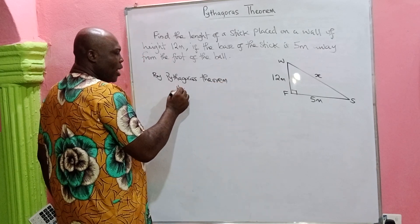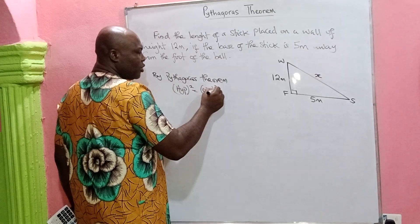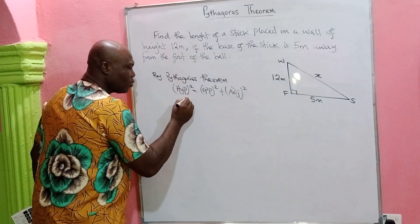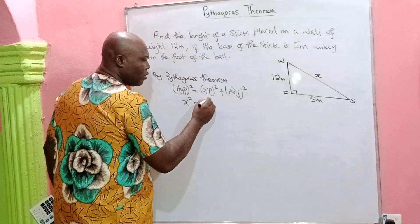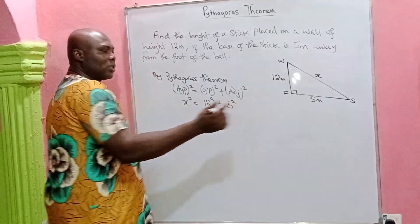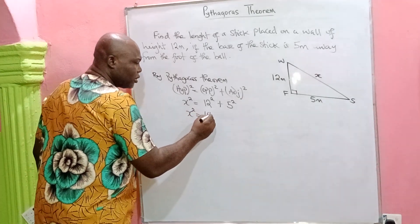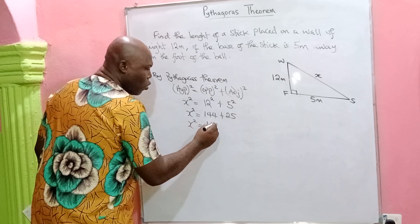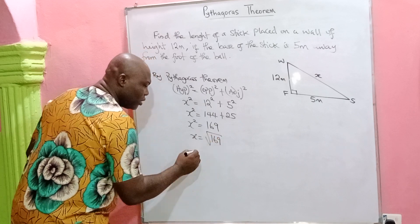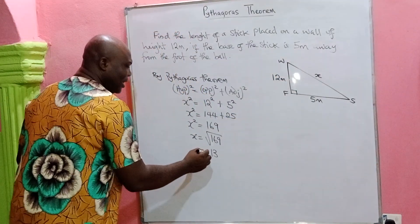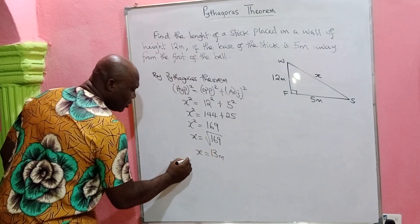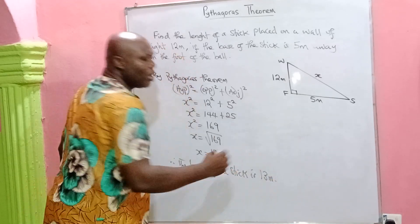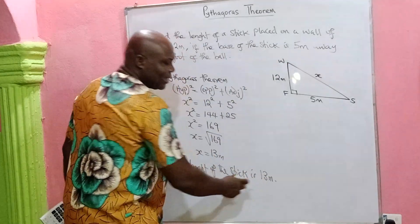By Pythagoras theorem, x squared equals 12 squared plus 5 squared. So x squared equals 144 plus 25 equals 169. Therefore x equals the square root of 169, which is 13. The length of the stick is 13 meters. This also confirms that 5, 12, 13 is a Pythagorean triple — a set of three numbers satisfying the Pythagorean theorem.